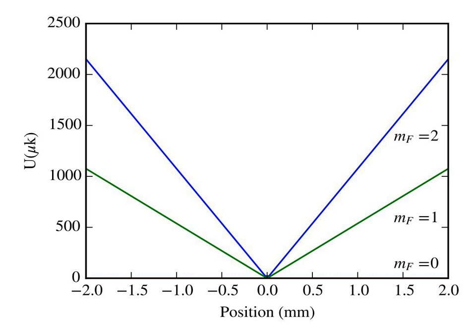The hot atoms leaving the trap are on the tail of the Maxwell Boltzmann distribution and therefore carry away a significant amount of kinetic energy, mitigating the loss of atoms by an overall increase in phase space density.